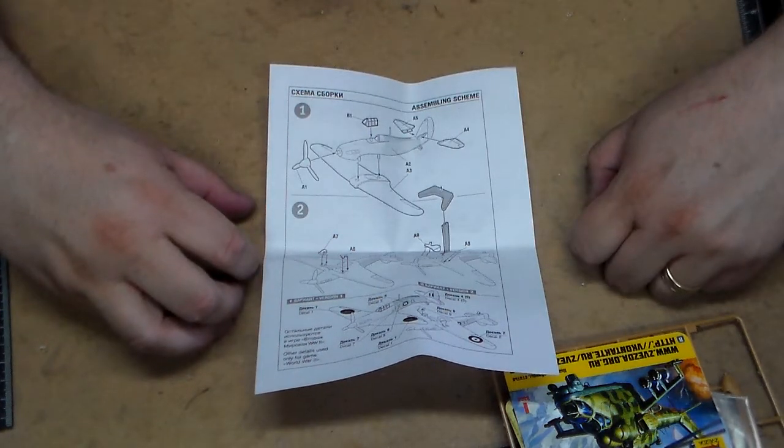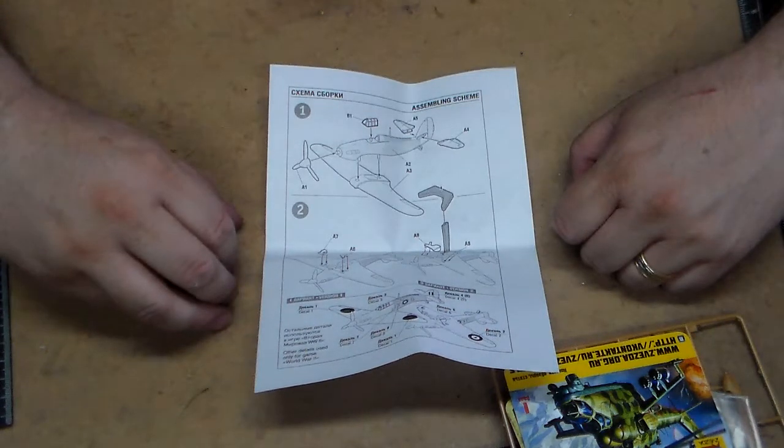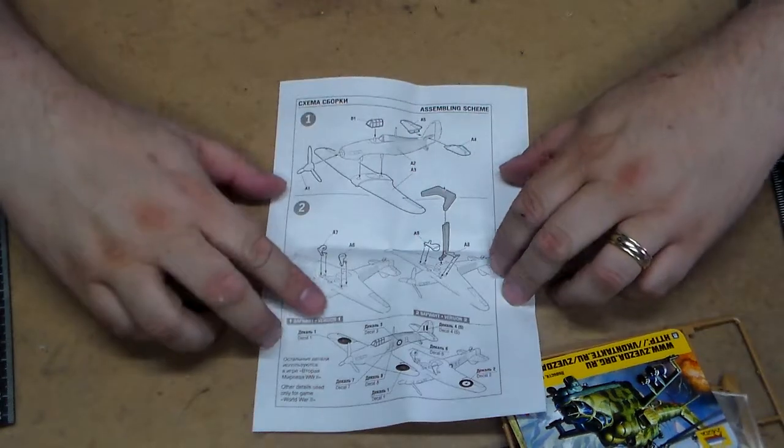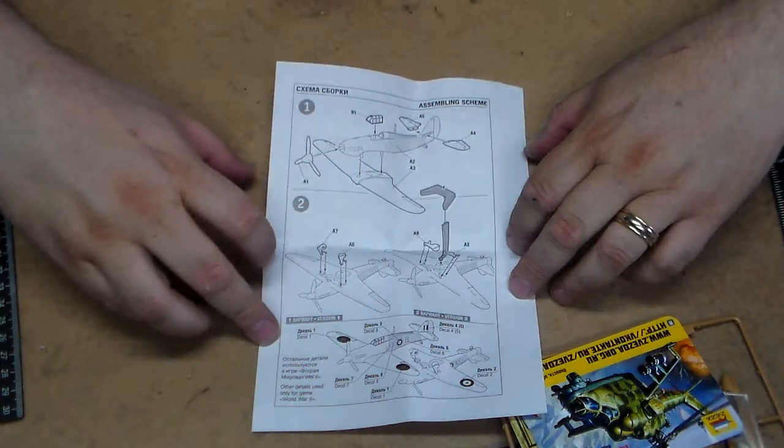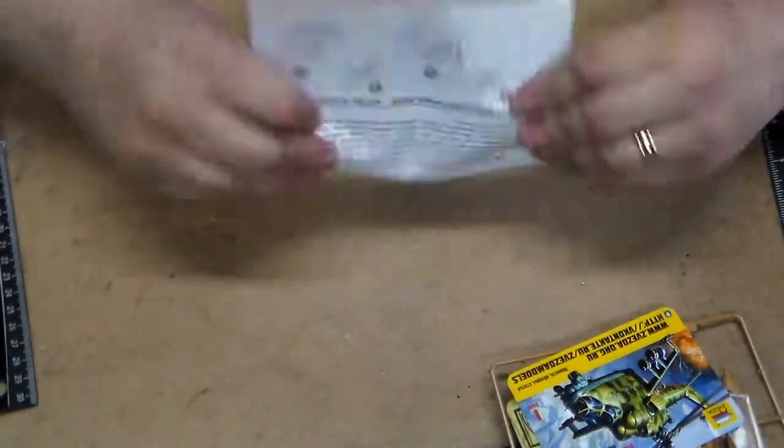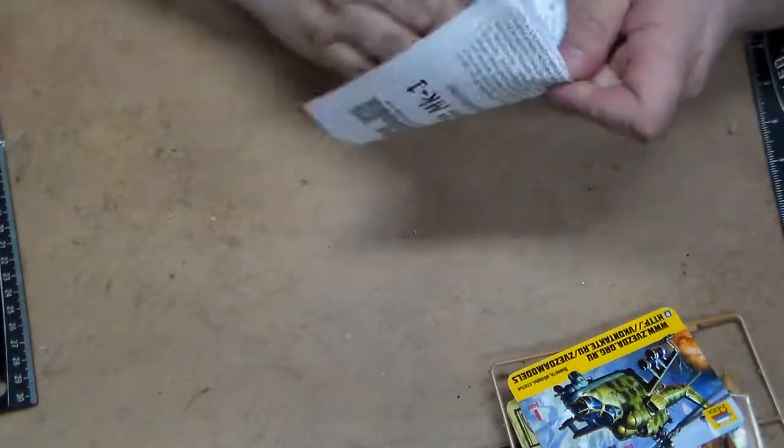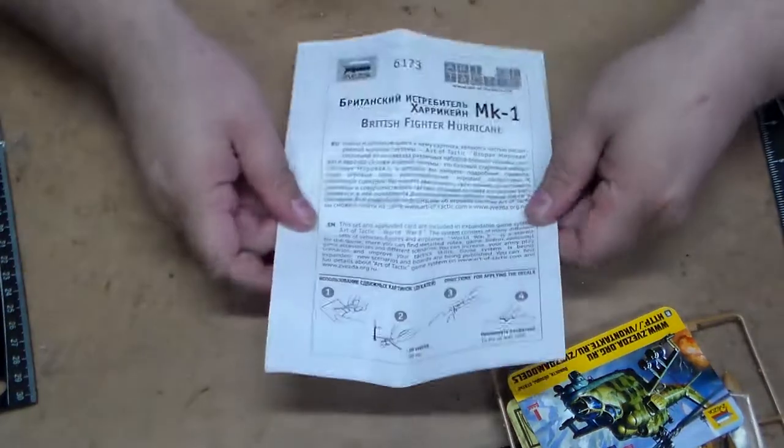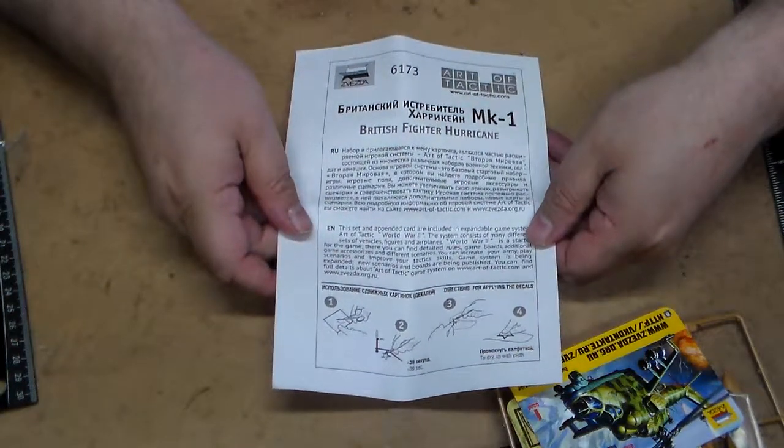There are a number of Flames of War fans out there who would also enjoy this. As you can see that there seems to be two versions of the plane. You can either have it with the landing gear up or the landing gear down. Probably will put the landing gear up. And on the front of it, it talks a little bit about how to apply the decals on there.